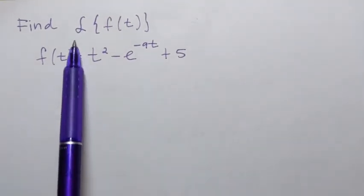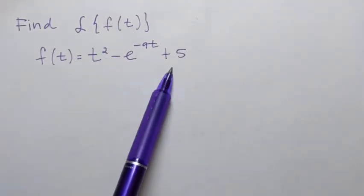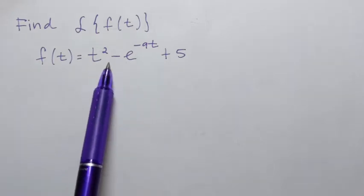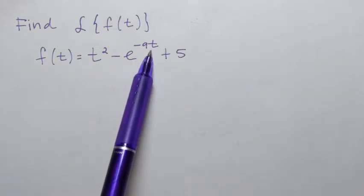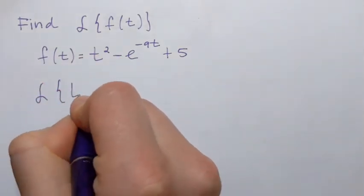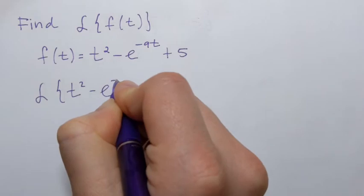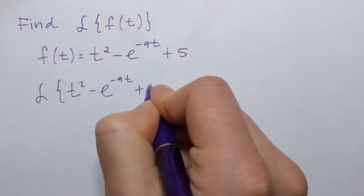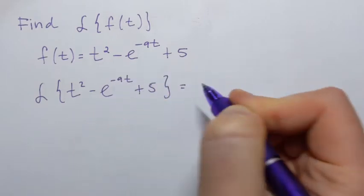In this example, we need to find the Laplace transform of the following function: t squared minus e to the power negative 9t plus 5. Let's write this down. So Laplace transform of t squared minus e to the power negative 9t plus 5, and that's what we're looking for.